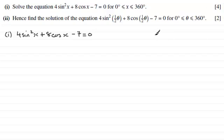Because you should be familiar with this identity, that is that sine squared x plus cos squared x is identical to 1. And from this, we can make sine squared x the subject by taking cos squared x from both sides. Sine squared x is the same as 1 minus cos squared x. And that's what we're going to substitute in here. Instead of 4 multiplied by sine squared x, it's now going to be 1 minus cos squared x. And then we've got plus 8 cos x, and then minus 7, and that equals 0.